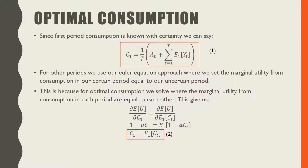Since our first period consumption is known with certainty, we can say that our consumption in period 1 is equal to 1 over T — which is all the periods over our consumer's lifetime — times our endowment at period 0, denoted by A0, plus the expected labor income flows based on the information in period 1.